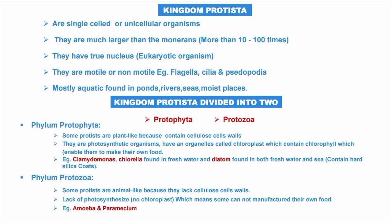As we go down the classification, the complexity increases. Monera are unicellular and prokaryotic. Now we talk about Protista. Protista has similarities to both plants and animals and is considered a borderline between the two kingdoms.